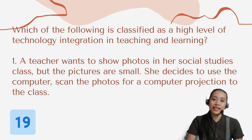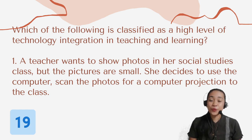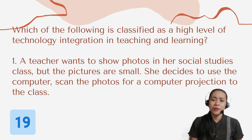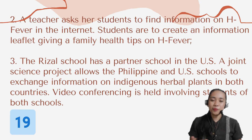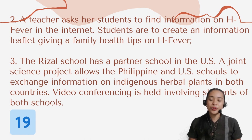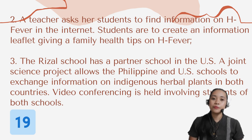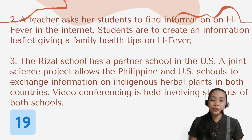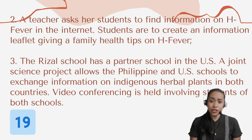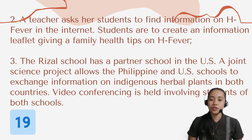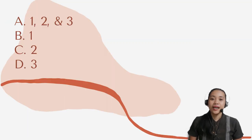Question number 19. Which of the following is classified as high level technology integration in teaching and learning? Number 1: A teacher wants to show photos in her social studies class — the pictures are small, so she decides to use a computer to scan the photos for projection to the class. Number 2: A teacher asks her students to find information on dengue fever on the internet; students are to create an information leaflet giving family health tips on dengue fever. Number 3: A result school has a partner school in the U.S.; a joint science project allows the Philippine and U.S. schools to exchange information on indigenous herbal plants in both countries; video conferencing is held involving students from both schools. Choices: A: One, two, and three. B: One. C: Two. D: Three.